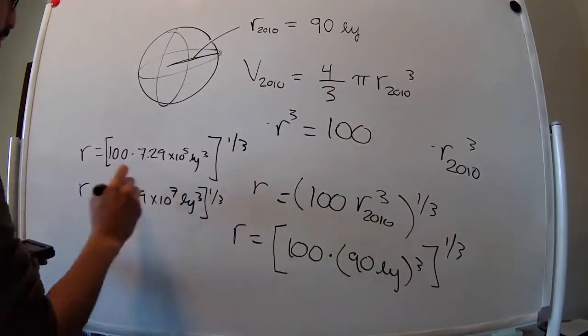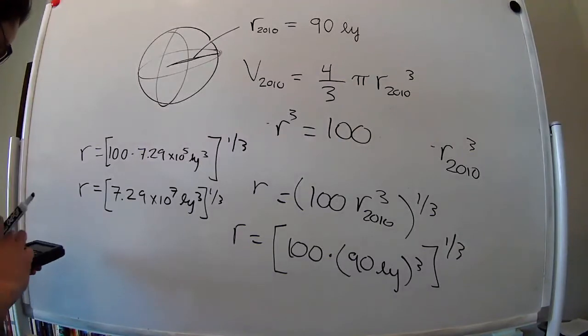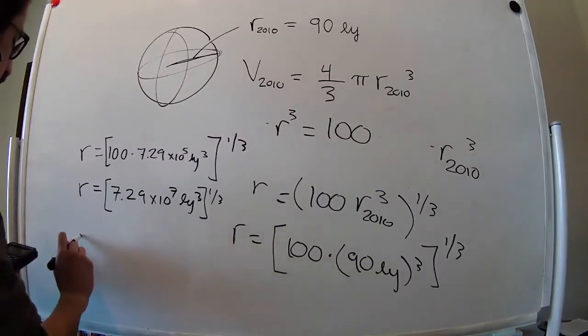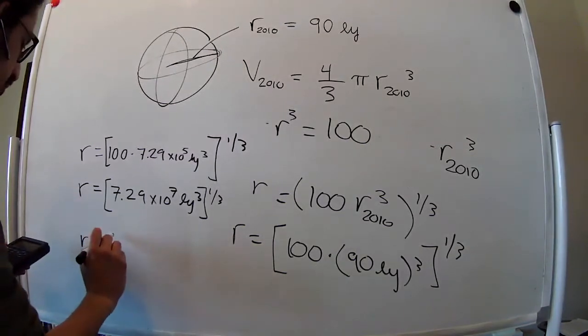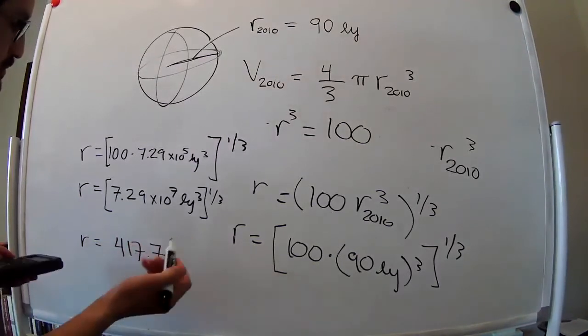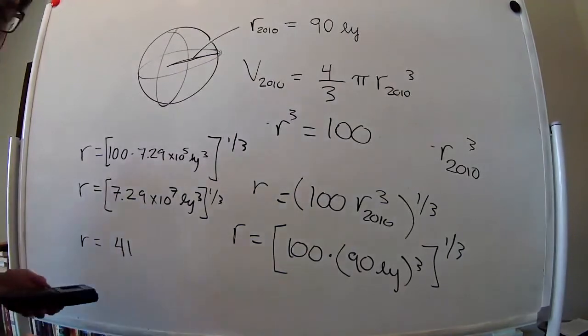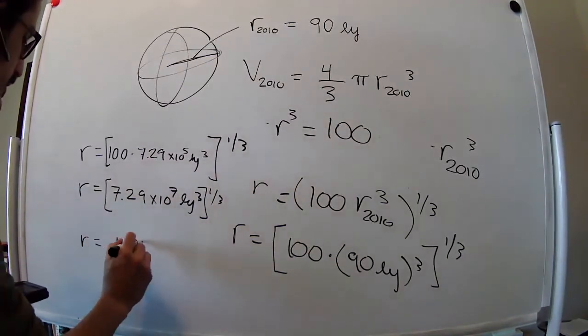Light years cubed to the 1/3. So taking 1/3, the radius is 417.7, which we can round up. It's 418 years.